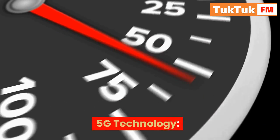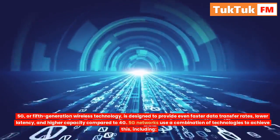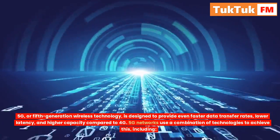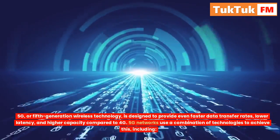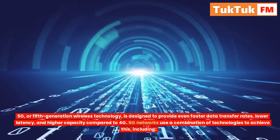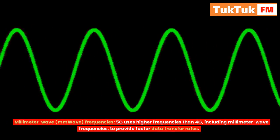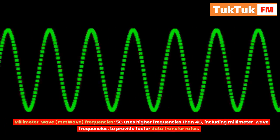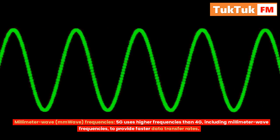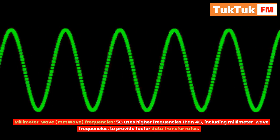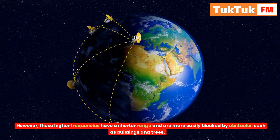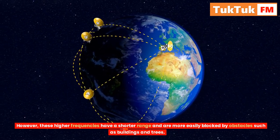5G technology. 5G, or fifth-generation wireless technology, is designed to provide even faster data transfer rates, lower latency, and higher capacity compared to 4G. 5G networks use a combination of technologies to achieve this, including millimeter-wave (MM-wave) frequencies. 5G uses these higher frequencies to provide faster data transfer rates; however, they have a shorter range and are more easily blocked by obstacles such as buildings and trees.